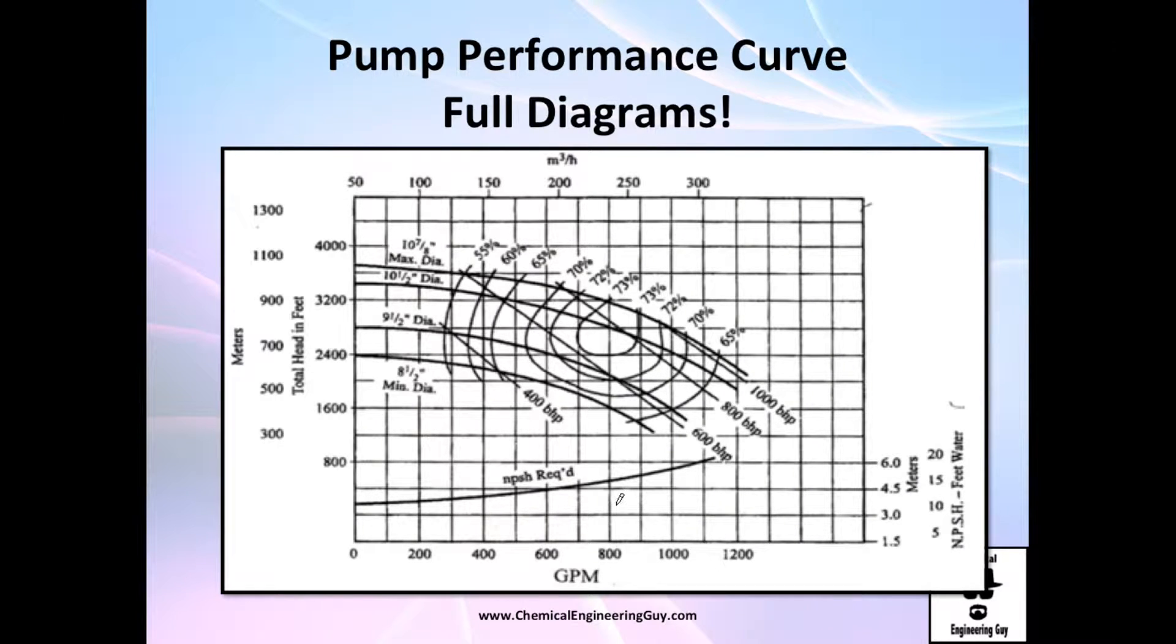The only thing I want to show you is a little bit on the axis right here. Just to be sure: this is the Q volumetric flow rate, this is the system or pump head. We have different lines for different diameters.